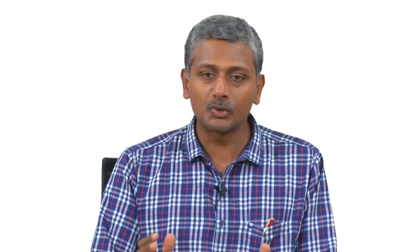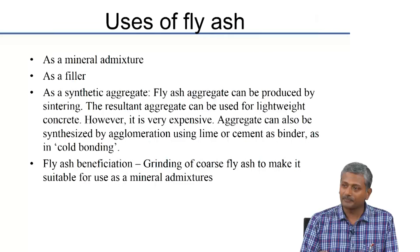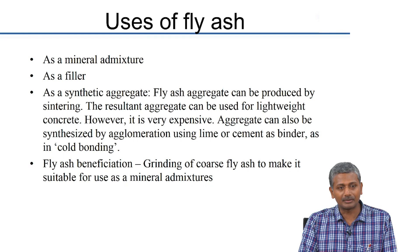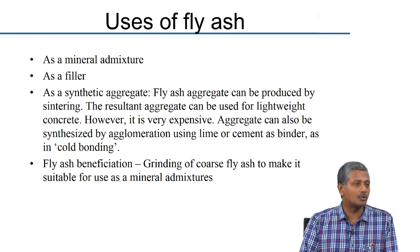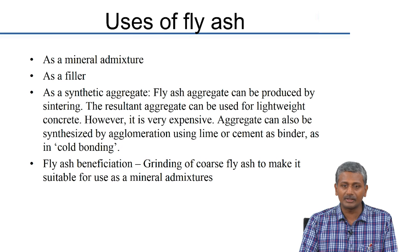The solution proposed was that they could use fly ash as a replacement for the fine aggregate, so that way they had fly ash in the system but were not showing it as an additive or a replacement of cement. They still had the same quantity of cement as in the control mixture, but replaced part of the aggregate with fly ash, and this led to performance as expected in terms of both compressive strength and durability.